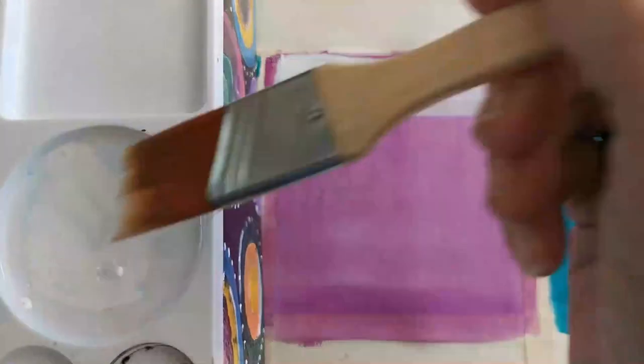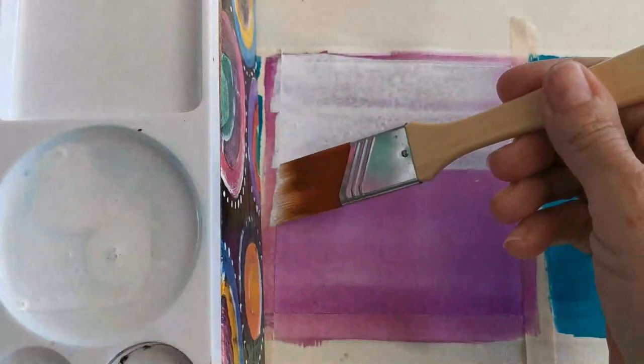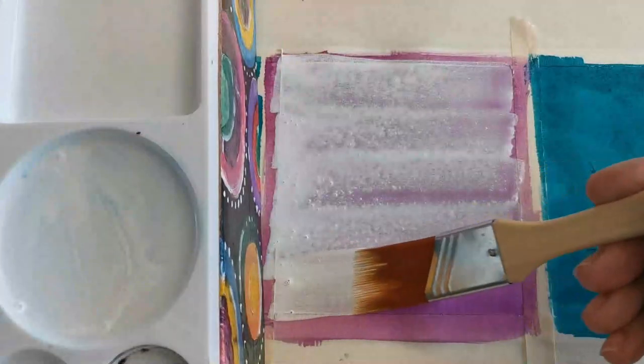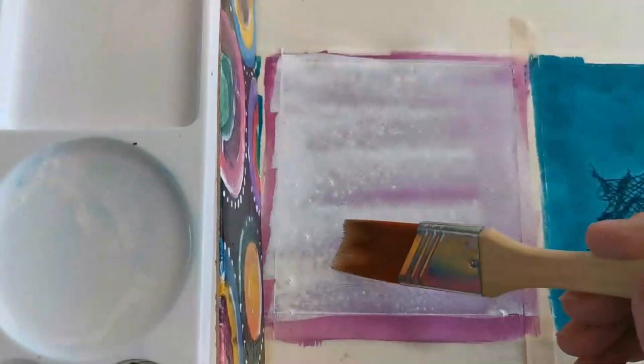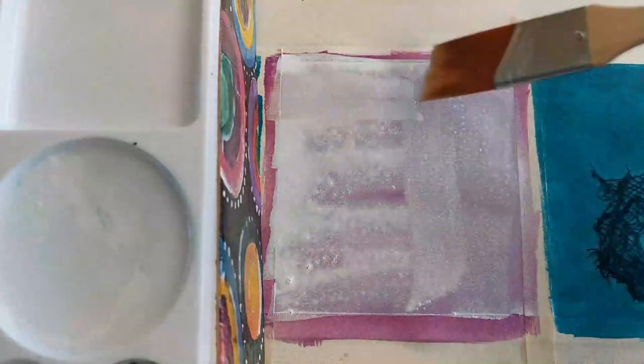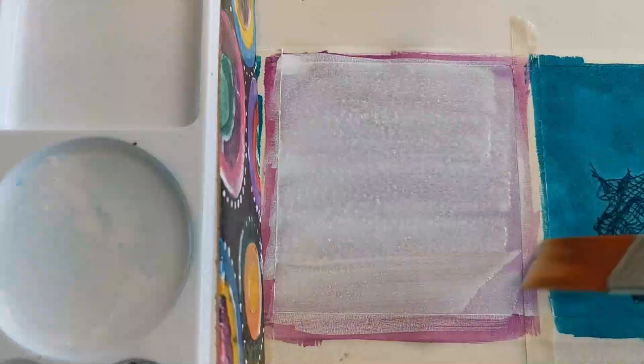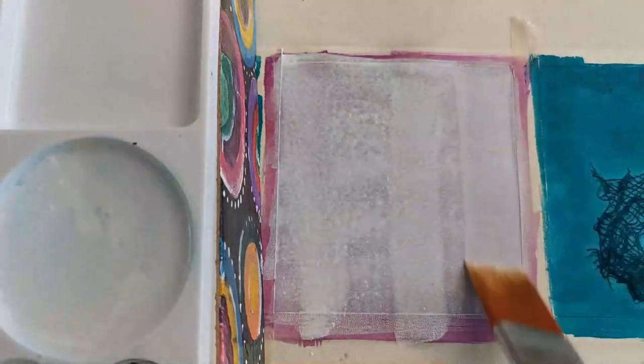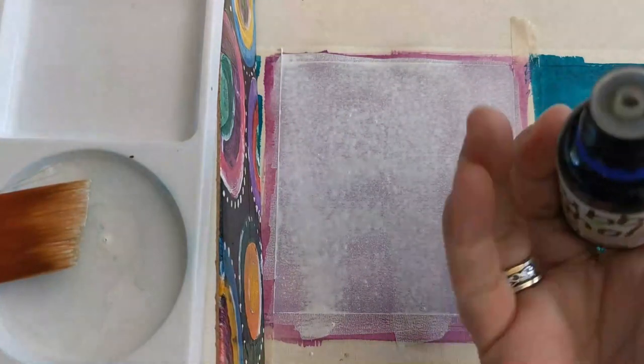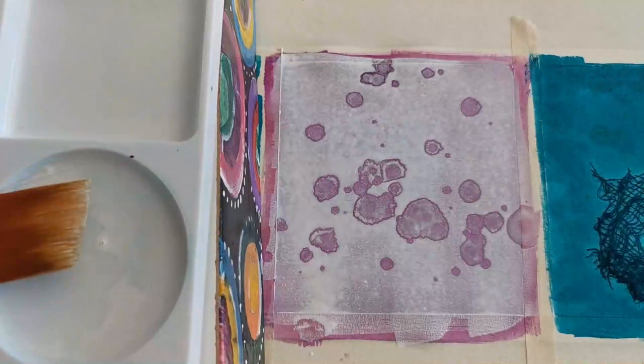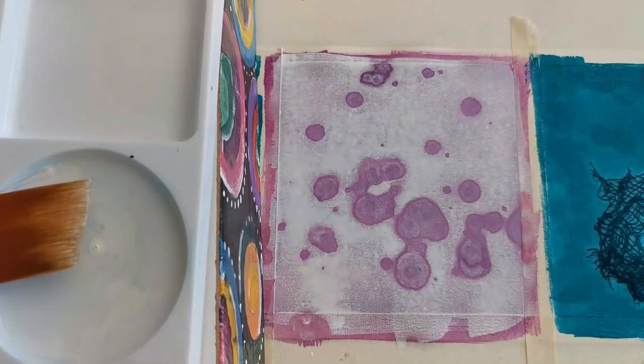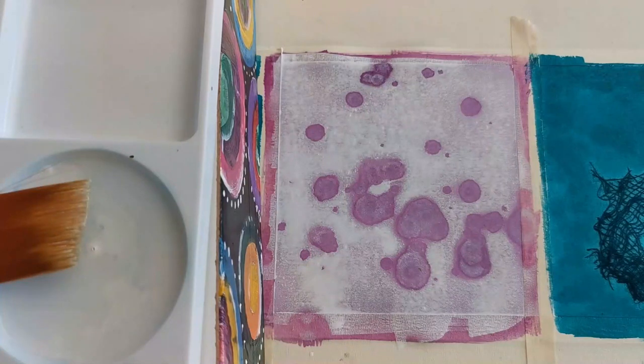And then while it's wet, I'm going to drop in the rubbing alcohol. Now I'm going to take rubbing alcohol, I think it's 91%. I'm just going to drop that in. And I'm going to let it get to work. And when it's dry, I'll come and show you how it looks.